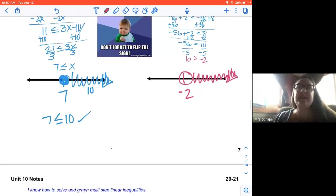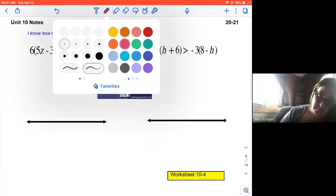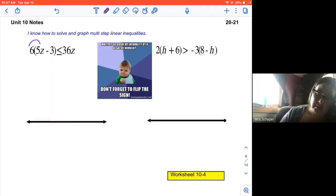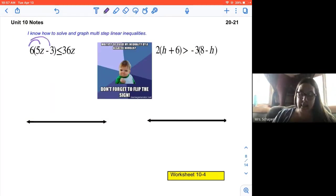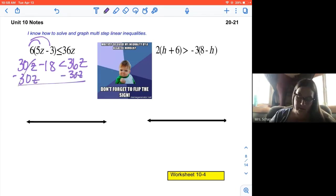Here we go. Two more. And then we're gonna give you some time to work on your worksheet. All right, here we go. We're going to start by distributing. So we've got that 30 Z minus 18 is less than 36 Z. So we're going to subtract 30 Z from both sides. So negative 18 is less than 6 Z. And now I'll divide both sides by six.